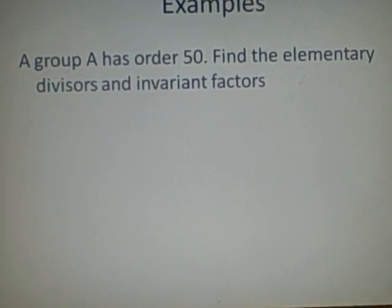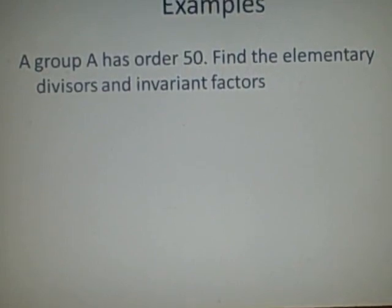Examples. A group A has order 50, find the elementary divisors and invariant factors. First we have to set it out in its prime factors, which would be 2 times 5 times 5.